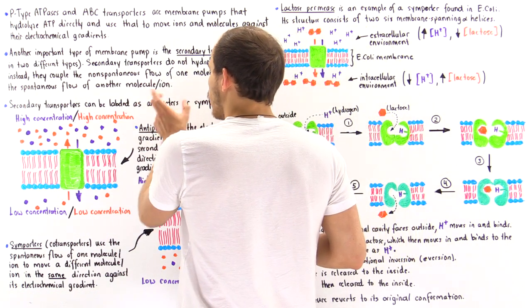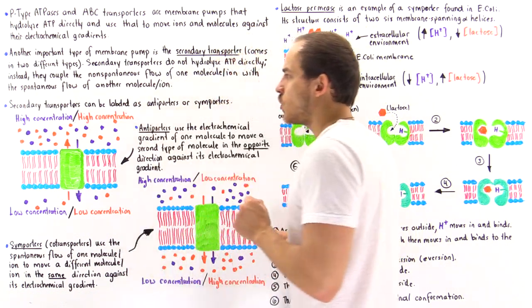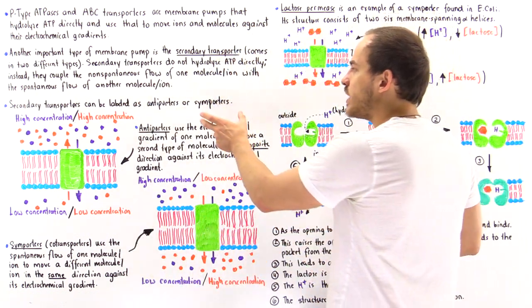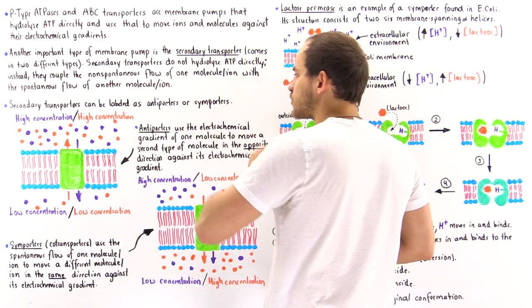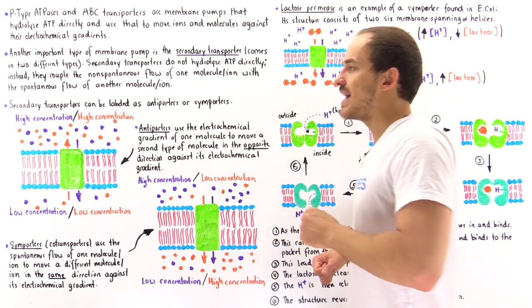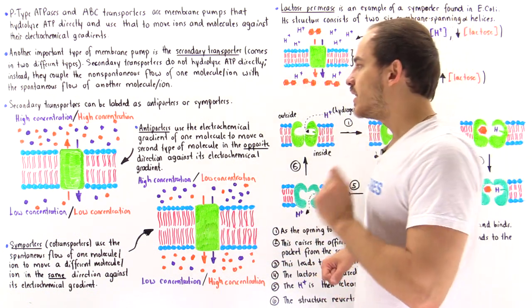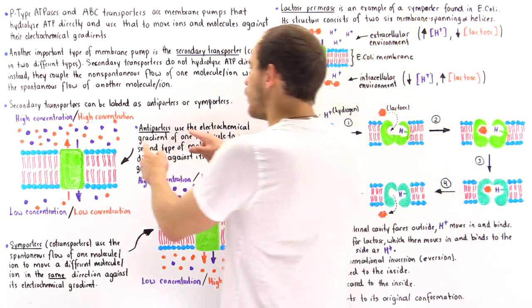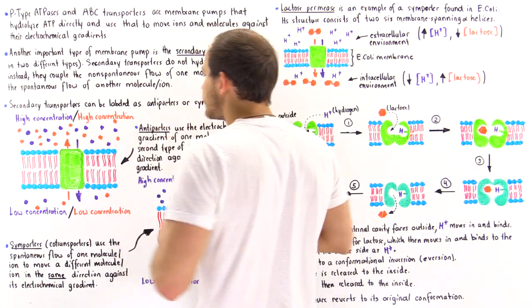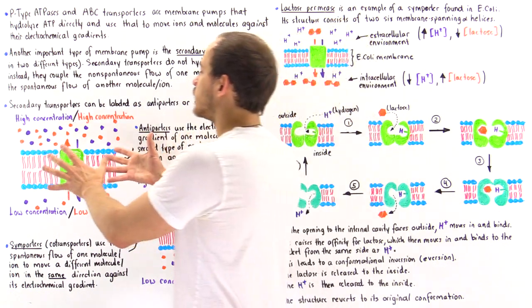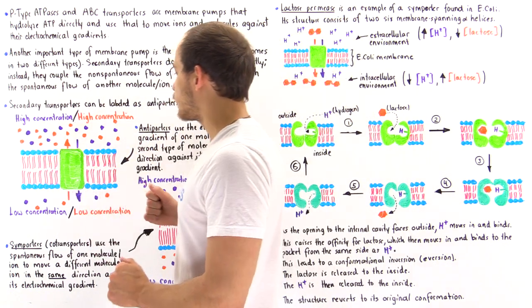We have antiporters, also known as exchangers, and we have symporters, also known as co-transporters. Let's begin by focusing on antiporters and take a look at this diagram.